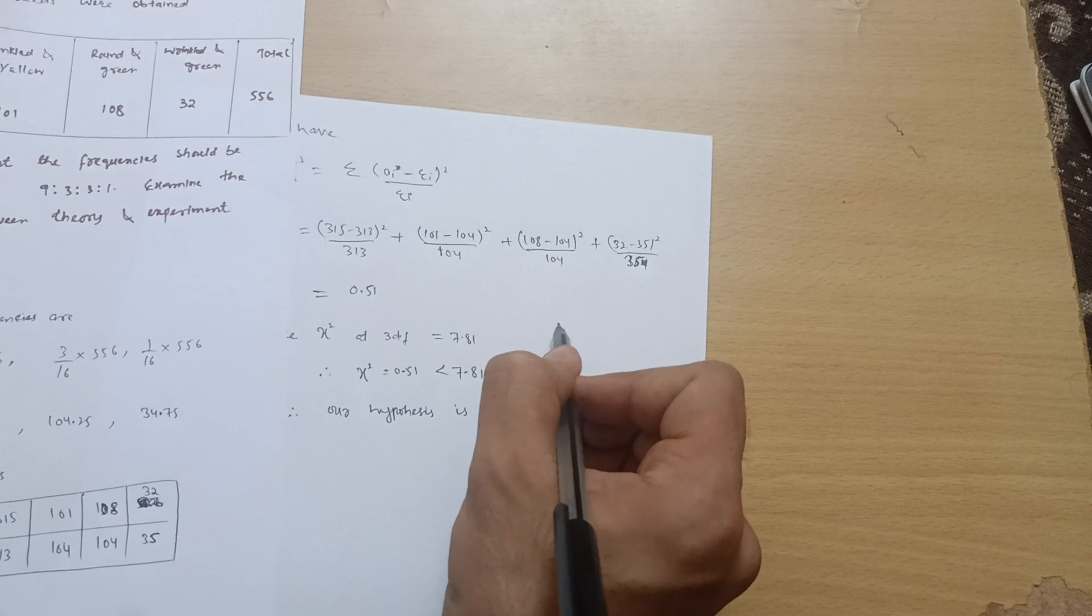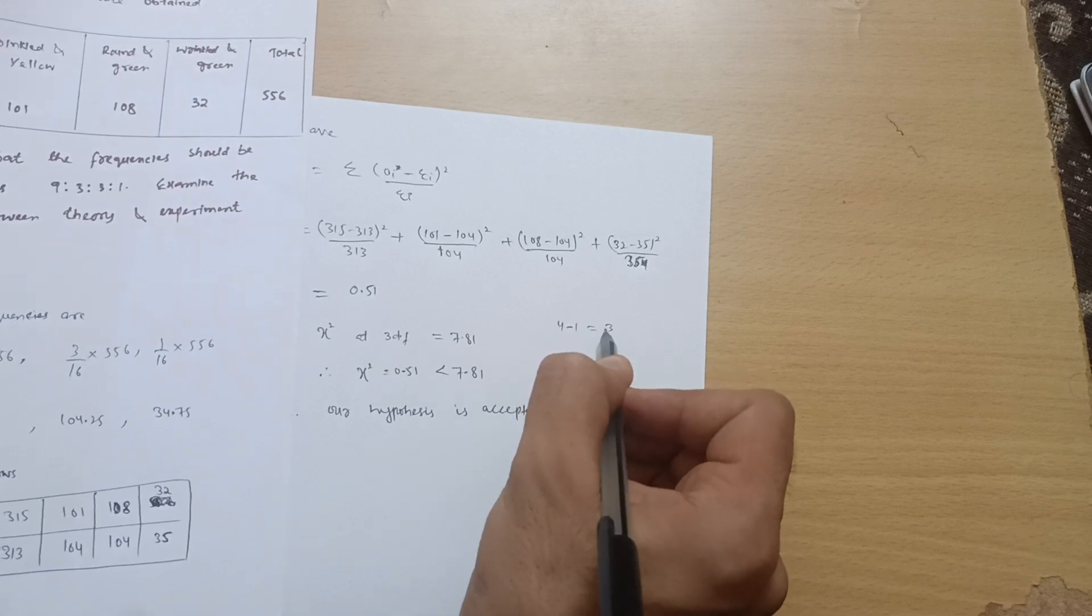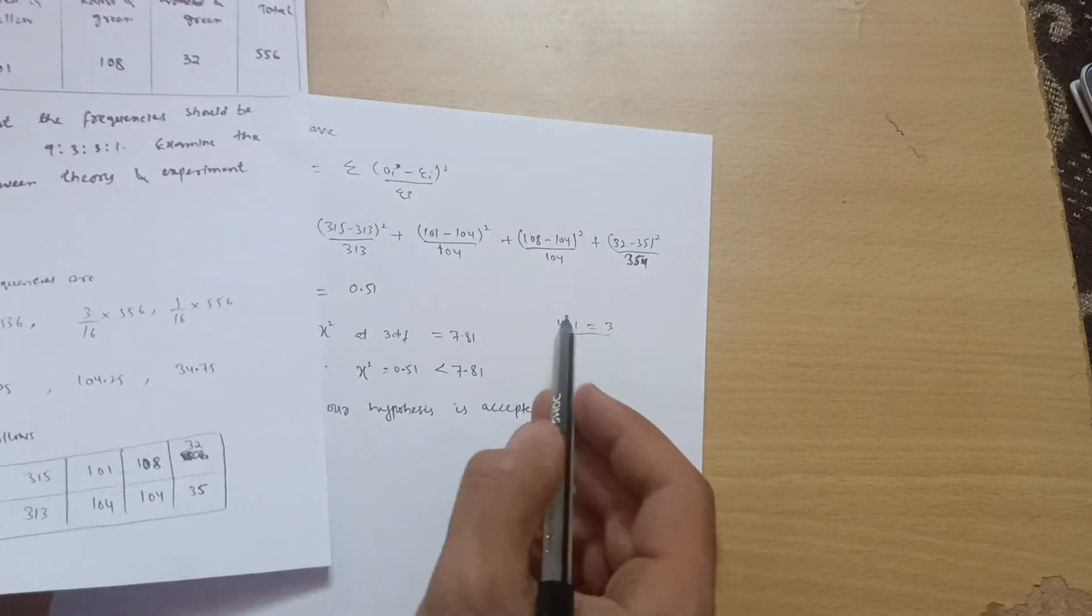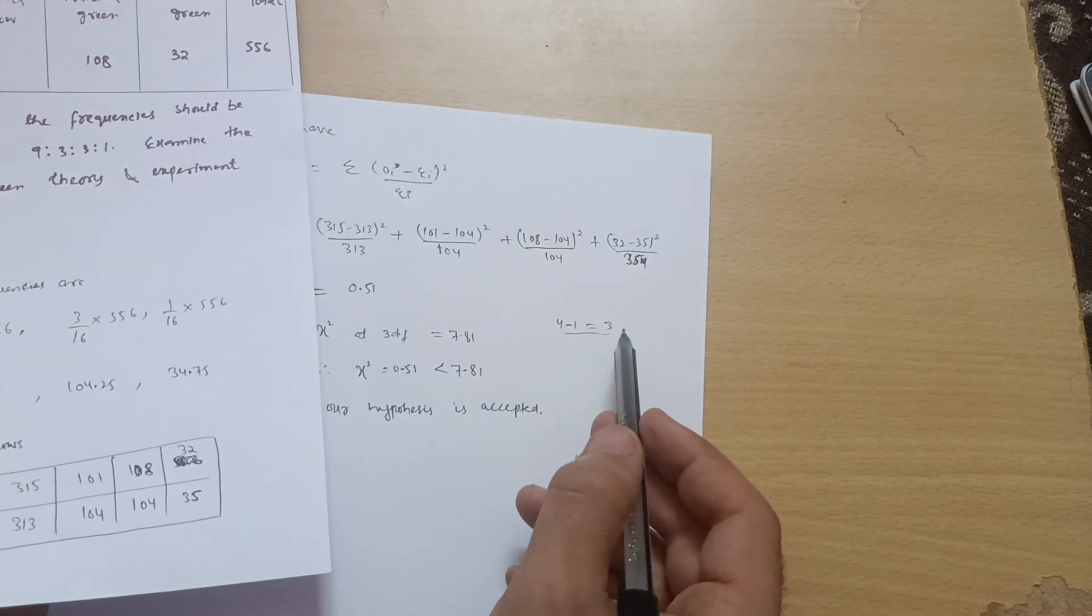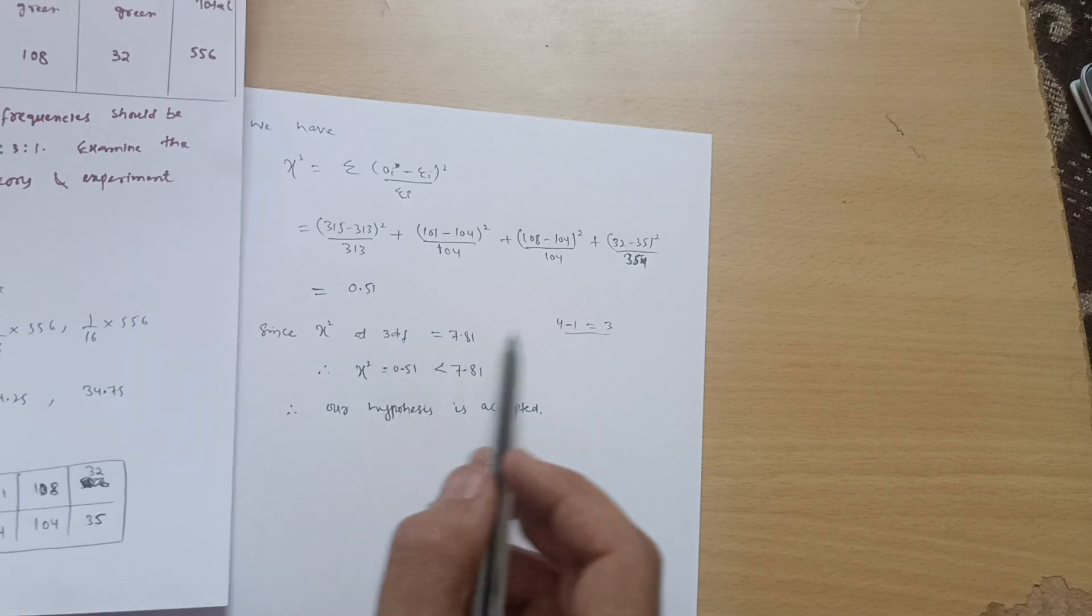So degree of freedom is equal to 4 minus 1, which is equal to 3, number of varieties minus 1. So your degrees of freedom will be 3.